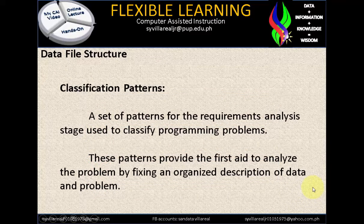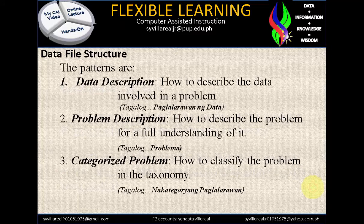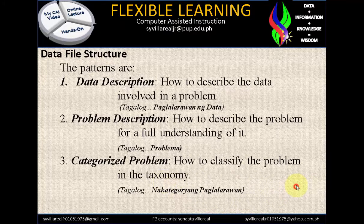Classification patterns are a set of patterns for requirements analysis, used to classify programming problems. These patterns provide the first aid to analyze the problem by providing an organized description of data and problems. The patterns consist of three descriptions: data description — which identifies how to describe the data involved in the problem; problem description — which identifies how to describe the problem for full understanding; and categorize problem — on how to classify the problem into a taxonomy, meaning a description.